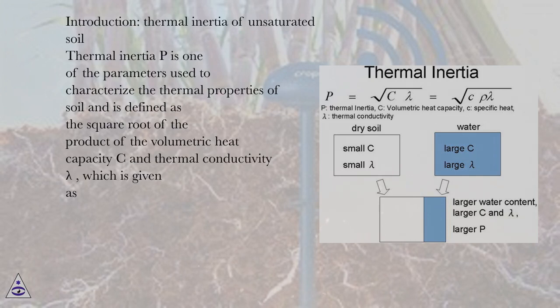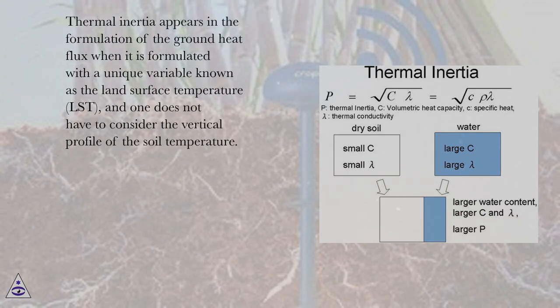the square root of the product of the volumetric heat capacity C and thermal conductivity λ, which is given as: Thermal inertia appears in the formulation of the ground heat flux when it is formulated with a unique variable known as the land surface temperature, LST,